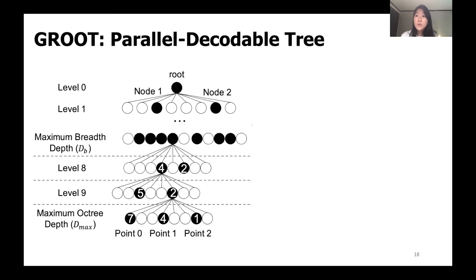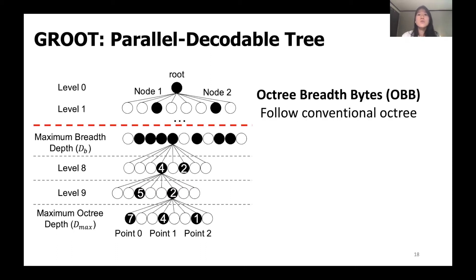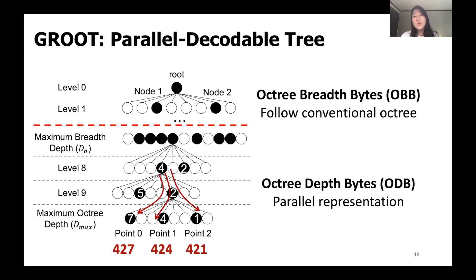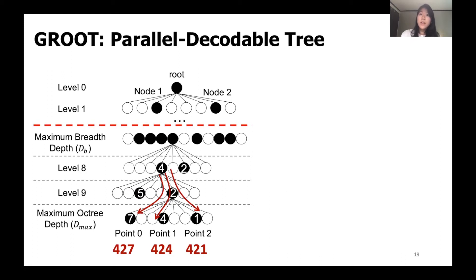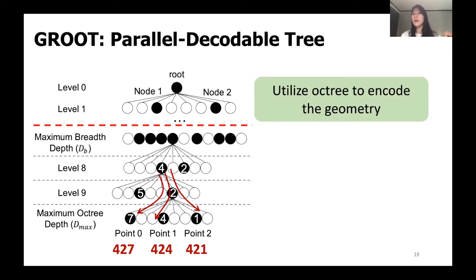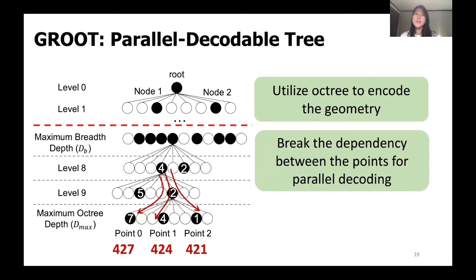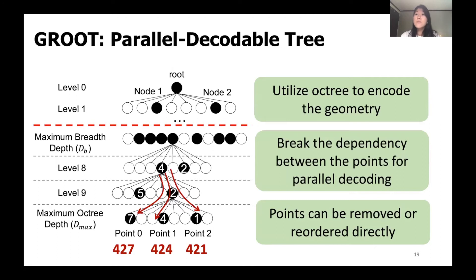Since the latency resides in the last few depths, we first cut the OctTree before the last two to three depths. For the top part, we use the conventional OctTree data structure to effectively compress the spatial information. For the remaining trio levels from the maximum breadth depth and below, we represent them individually in depth-first order and name it OctTree Depth Bytes (ODB). This hybrid representation lets us leverage OctTree compression while breaking dependency between points for parallel decoding. Additionally, we can easily remove or reorder points without decoding the entire compressed byte stream.